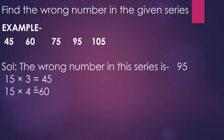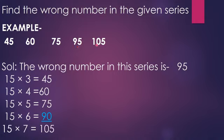15 fours are 60, 15 fives are 75, 15 sixes are 90. So there must be number 90. And 15 sevens are 105. So the complete series is based on the table of 15.